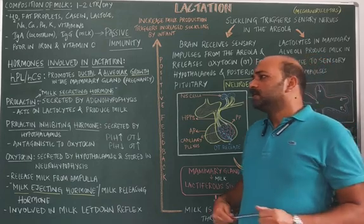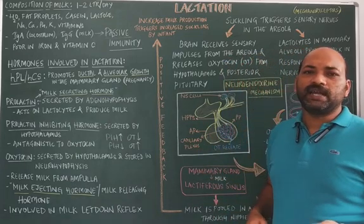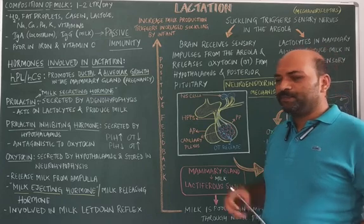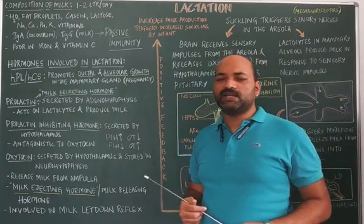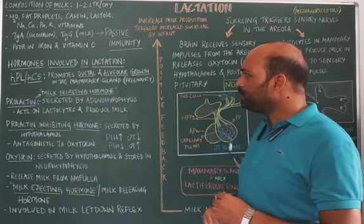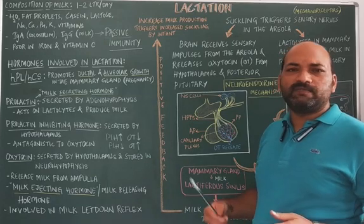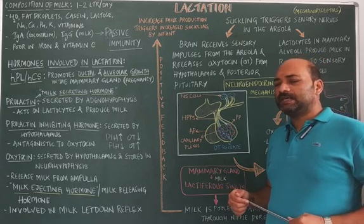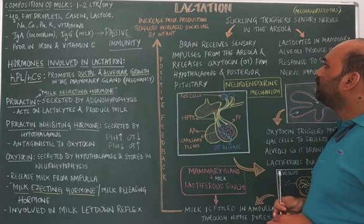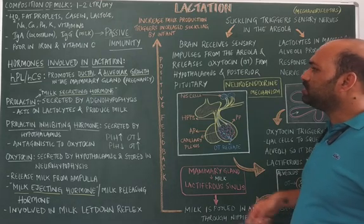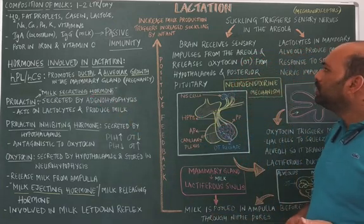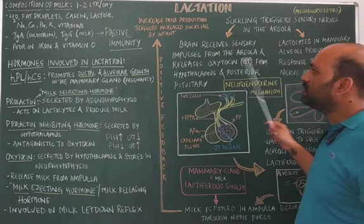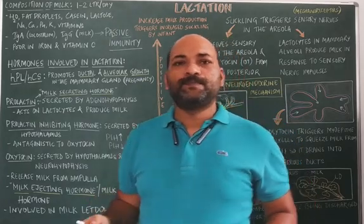Reports state that a female should feed her young one for a minimum of 6 months. Otherwise, there is a possibility of the infant becoming severely infected by various common diseases. If a female feeds her young one for a minimum of 6 months, the infant will develop a very good immune system. This concludes the video on lactation, covering the hormones involved, the physiology of lactation, milk production and ejection, and the composition of milk.